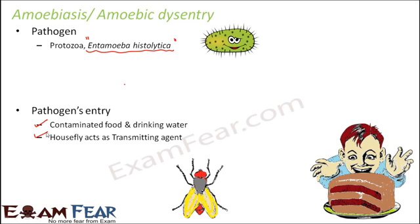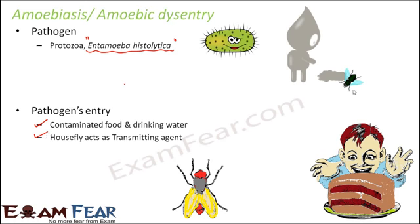The housefly acts as a mechanical carrier of the pathogen. The parasites — the protozoa — are present in the faeces of the infected person. The housefly will carry the parasites from the faeces and then carry them to the food of a normal person. So the parasite is present in the faeces, the housefly sits on the faeces, takes the parasite, and when it sits on the food of another person it transmits the parasite to that food.